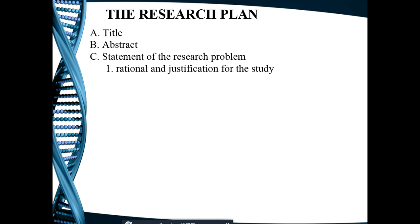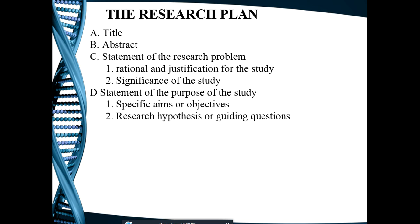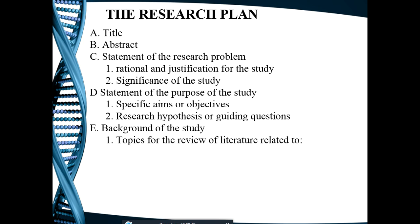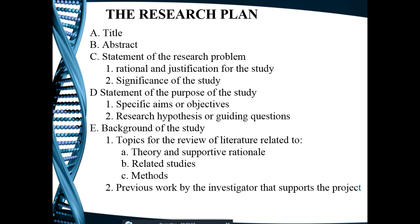The research problem section further includes rationale and justifications for the study, significance of the study, statement of the purpose of the study, specific aims or objectives, research hypotheses or guiding questions, and background of the study — which includes topics for the review of literature related to theory, supportive rationale, related studies, methods, and previous work by the investigator that supports the project.